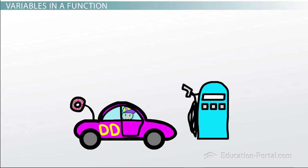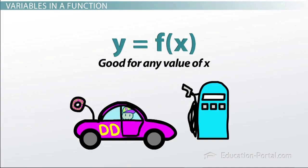So an important point here is to note that when we say y equals f of x, that's good for any value of x. We're using x as a variable here. If we say y equals f of 5, we're evaluating this function using x equals 5.